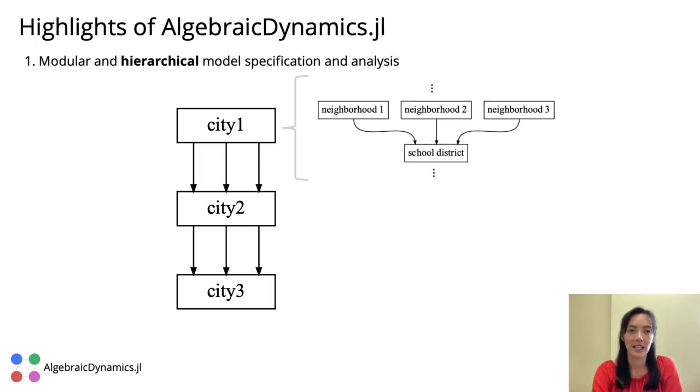Another advantage of AlgebraicDynamics is hierarchical model specification and analysis. In the previous example, the model for each city was given explicitly as an ODE. However, another option is to define a city's model as the composition of even more primitive systems, for example, as the composition of neighborhoods and school districts within a city.